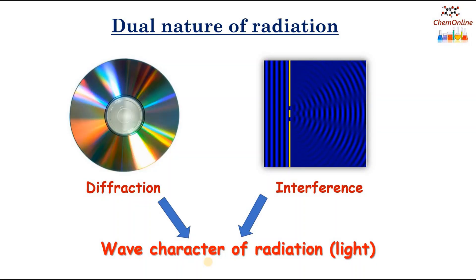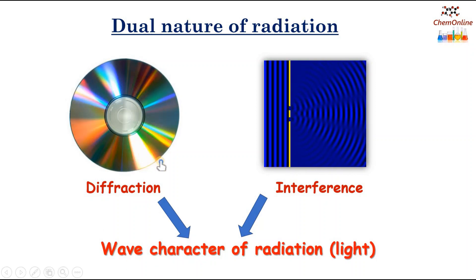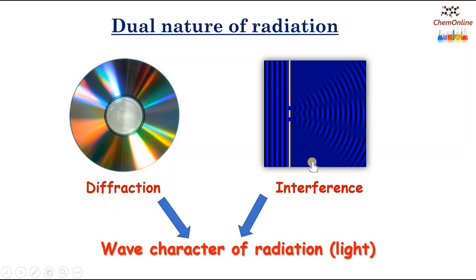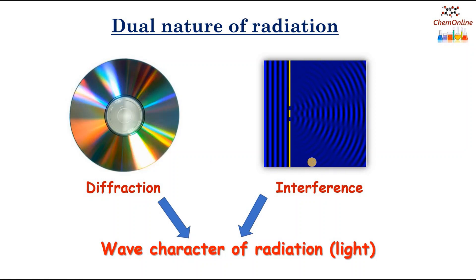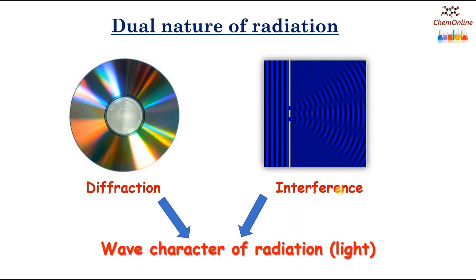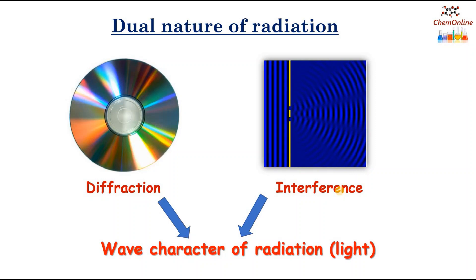We have seen many interesting properties of light like diffraction, interference, etc. The multicolored patterns that can be seen on the disk is due to diffraction of light. In this image, it shows the interference patterns created by the light when it is passed through a double slit. So, these properties show the wave nature of light or the wave nature of the radiation.